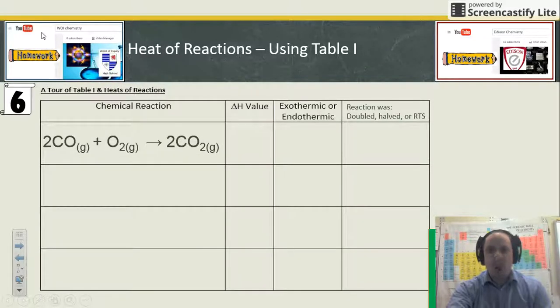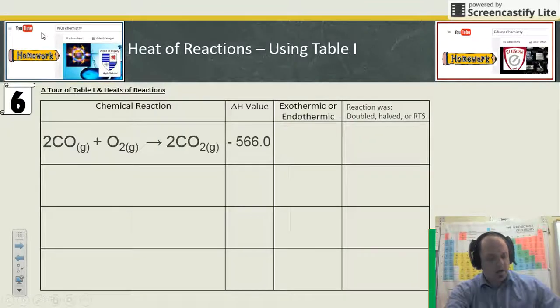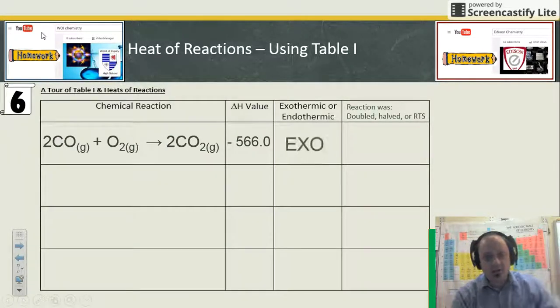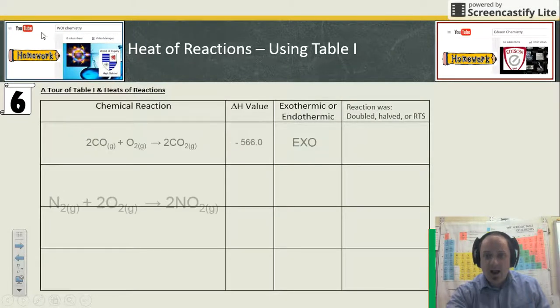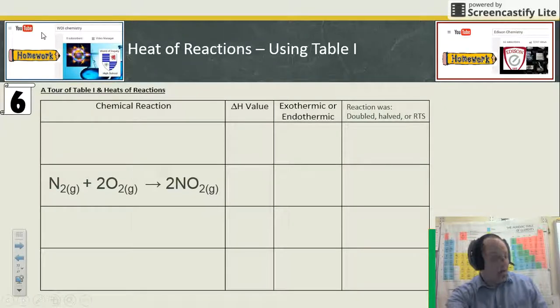Table I, some heats of reactions. This reaction here: CO, carbon monoxide gas, plus oxygen gas makes CO₂ gas. Delta H was negative so we know that's exothermic. The reaction didn't have anything to do, it was the same as before, remained the same.